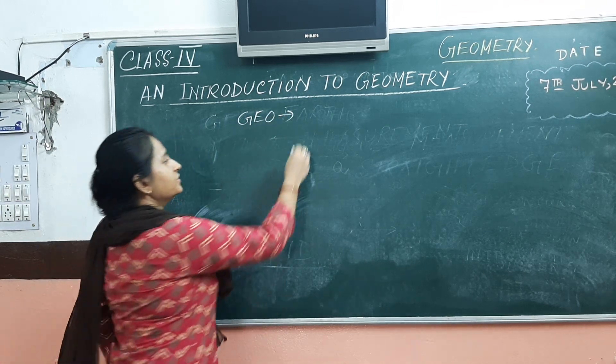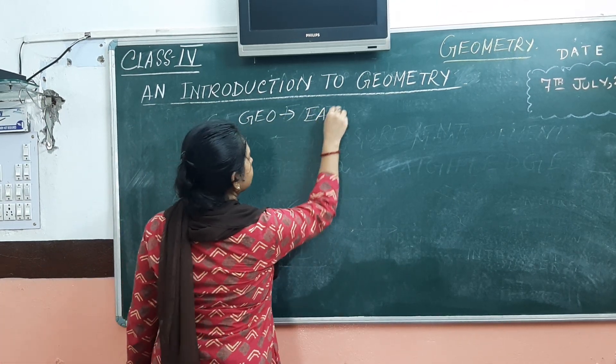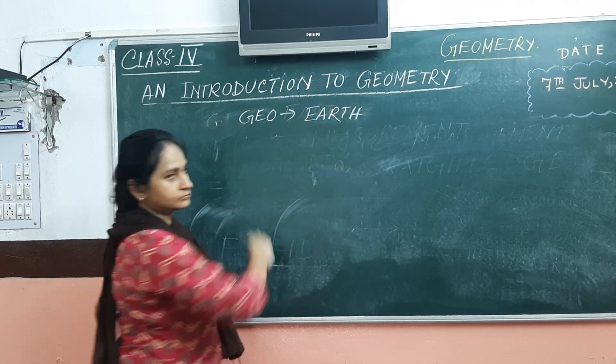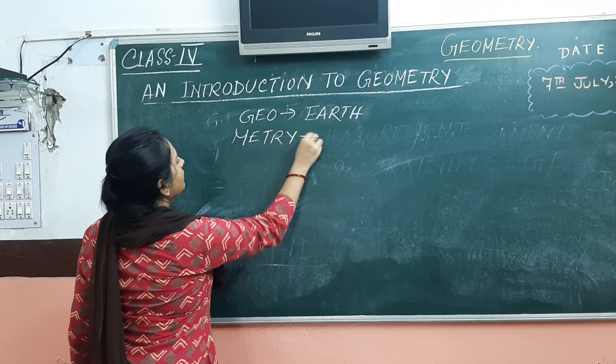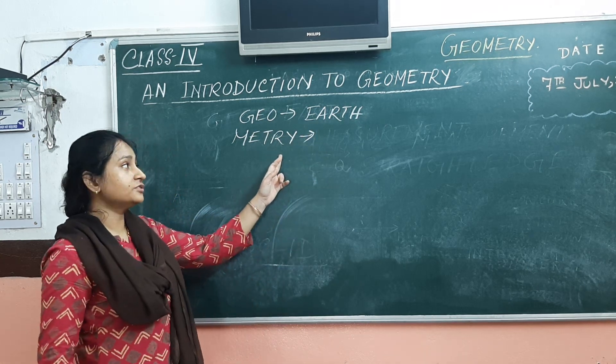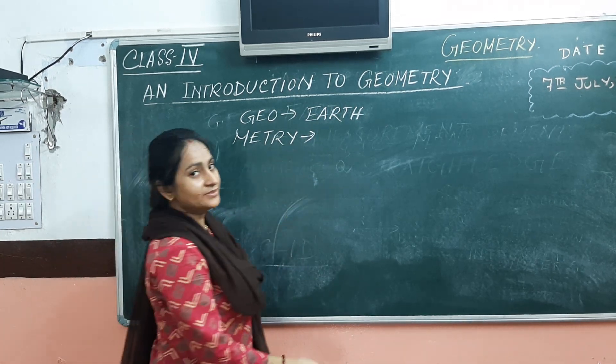The word geo means arts and the word metric comes from the word metric, which means measurement.